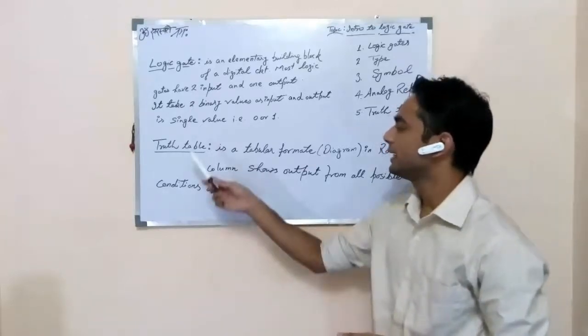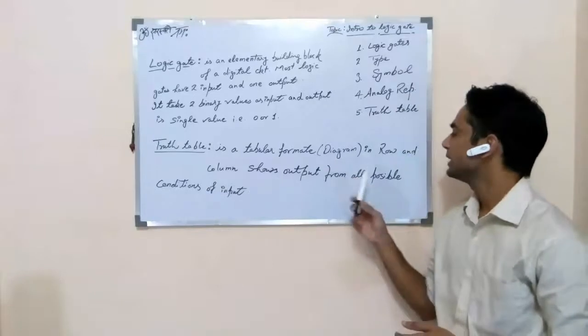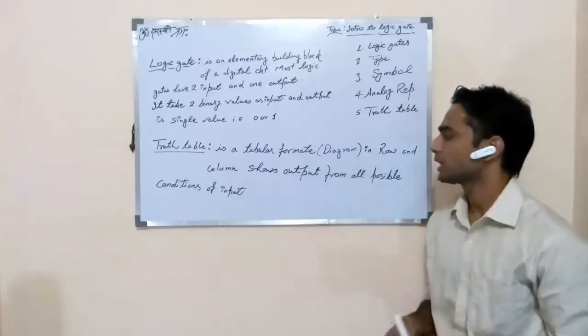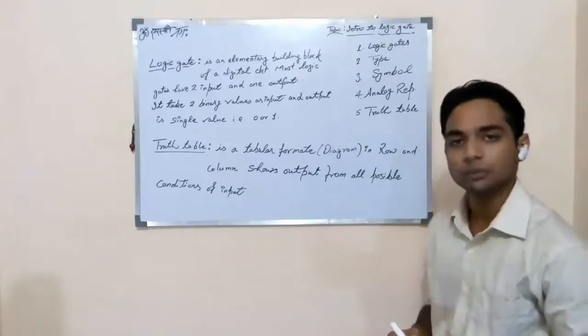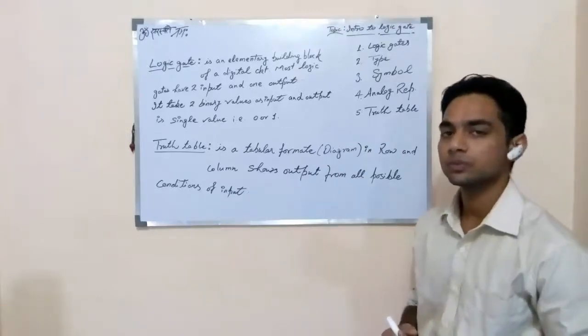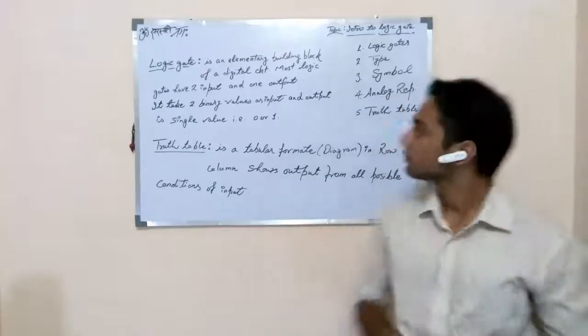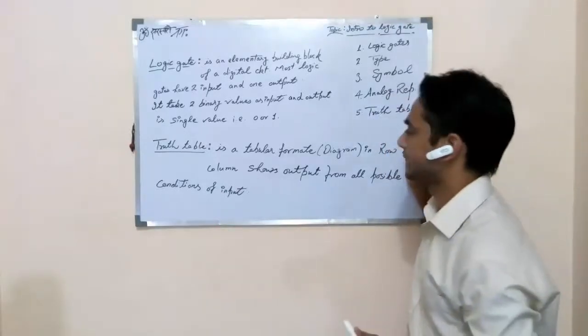Truth table or TT is a tabular format diagram in which rows and columns show output from all possible conditions of input. So, we proceed on types of logic gate.